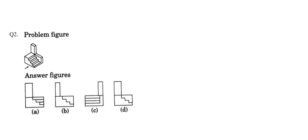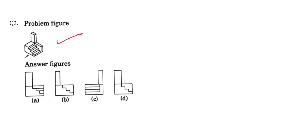Now let's move on to question number 2. We have been given a 3D figure and we need to find the correct front view of this figure. What is the difference between option A and B? You can see here this line ends where the stairs are starting. In option B, the stairs are starting here but this line is ending here, so there is a distance. But in option A, the starting of the stair and the ending of the wall are coinciding — there is no distance between them. So option B is a wrong answer.